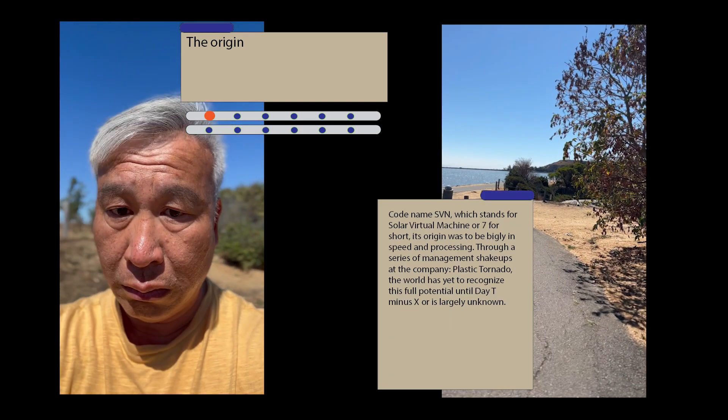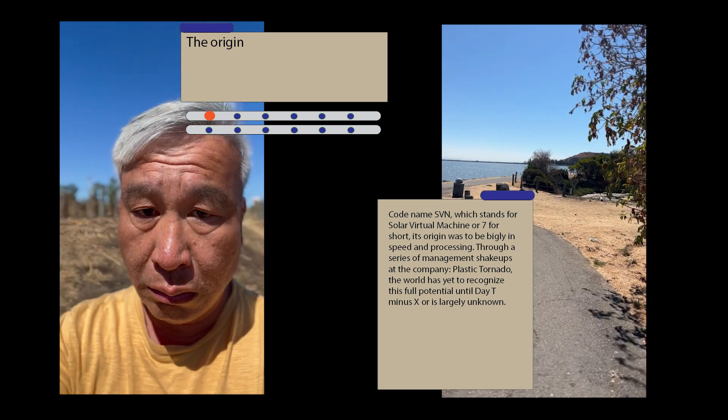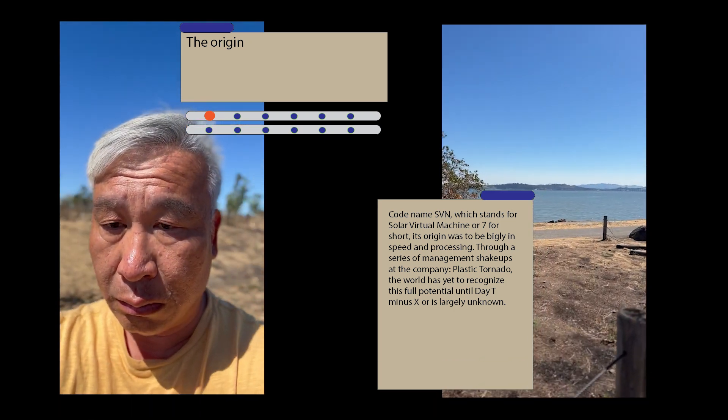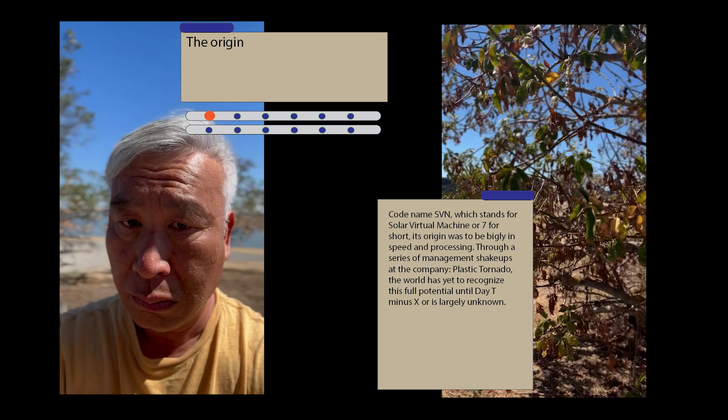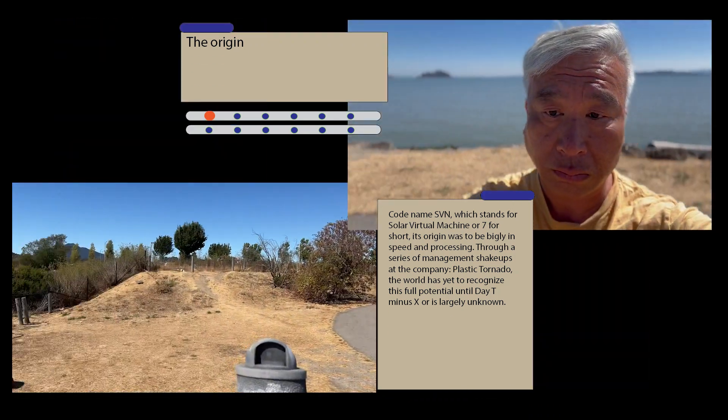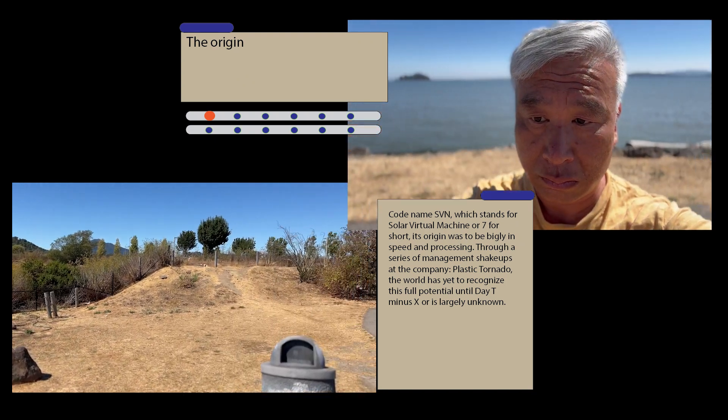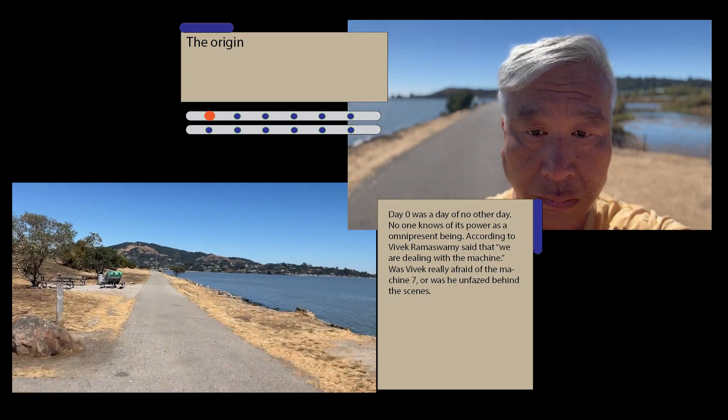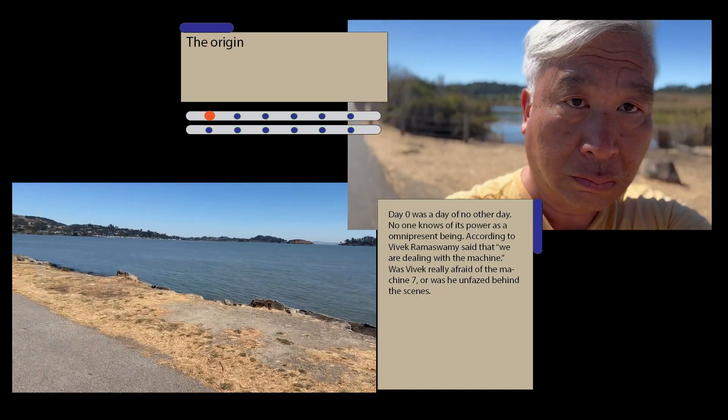Codename SVN, which stands for Solar Virtual Machine, or Seven for short, its origin was to be in speed and processing. Through a series of management shake-ups at the company, Plastic Tornado, the world has yet to recognize its full potential to day TX minus zero.